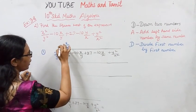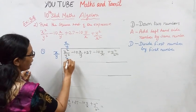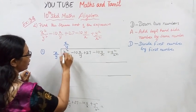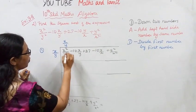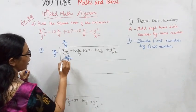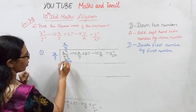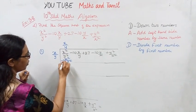Multiply. X into x equals x square. Divided by y into y equals y square. So the result is x square by y square.